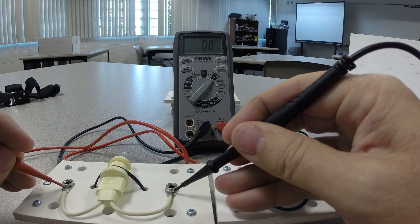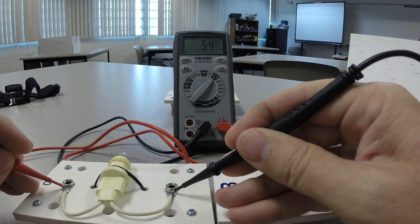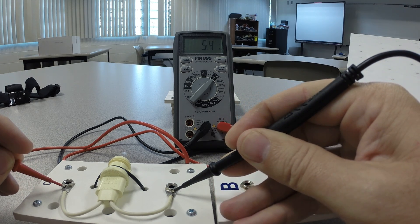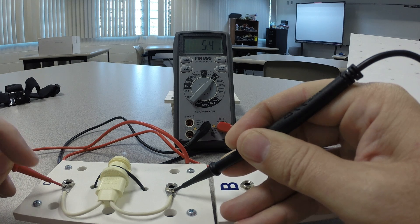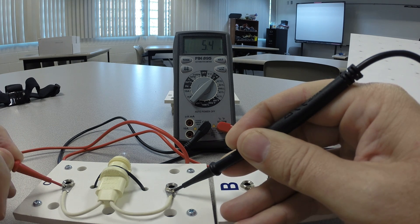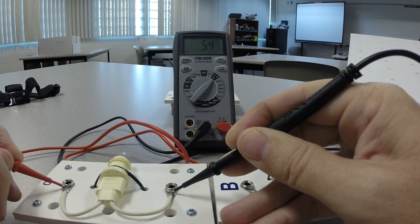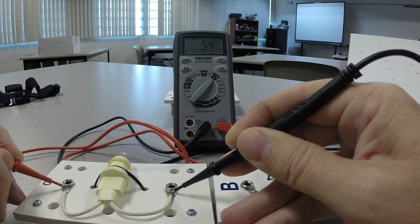If we try the other bulb, it shows we have 5.3 ohms, which is to be expected. This smaller bulb is not as bright. It has more resistance, so it doesn't flow as much current. So we have 5.4 ohms.